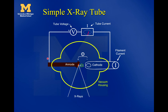Another quantity measured during this is the tube current. As electricity flows from cathode to anode, you have an electrical loop. The tube current is defined as the current of electricity running from the cathode to the anode in the x-ray tube. So we have two different currents: the filament current and the tube current. And that's the basics of an x-ray tube.